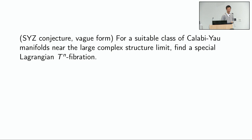Regarding the large complex structure limit: Yau's theorem tells you that to pin down a Calabi-Yau metric you need two pieces of data — one is to specify the complex structure, the other is to specify the Kähler class. In practice, specifying a complex structure amounts to pinning down the coefficients of the defining polynomials. You can vary this choice to get a one-parameter family and consider certain limits. The Kähler class often comes from a polarizing line bundle — once you have an embedding into projective space, that specifies a choice of Kähler class.